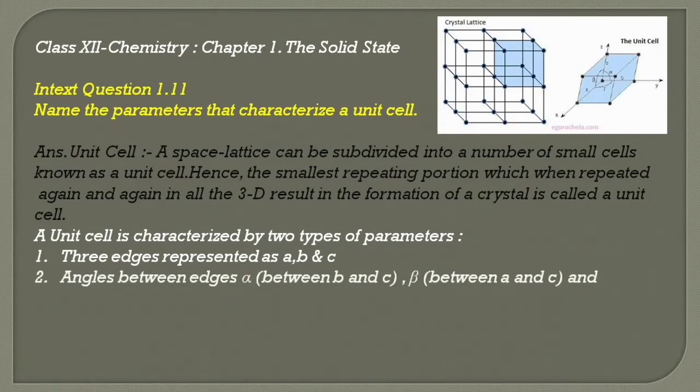Second, the angles between edges: alpha is the angle between b and c, beta between a and c, and gamma between a and b.